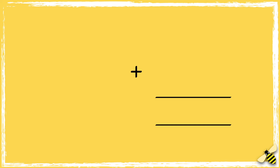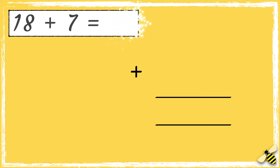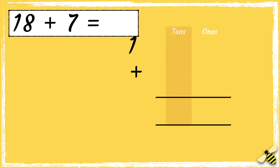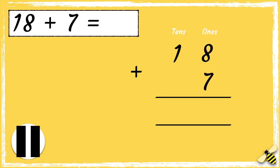Let's have a look at one more example. Here is a number sentence: 18 add 7. Remember to line your numbers up correctly, so we have the tens in one column and the ones in another column. The number 18 has one ten and eight ones. The number 7 has seven ones. Pause the video to give you time to work out the answer, then press play when you're done.